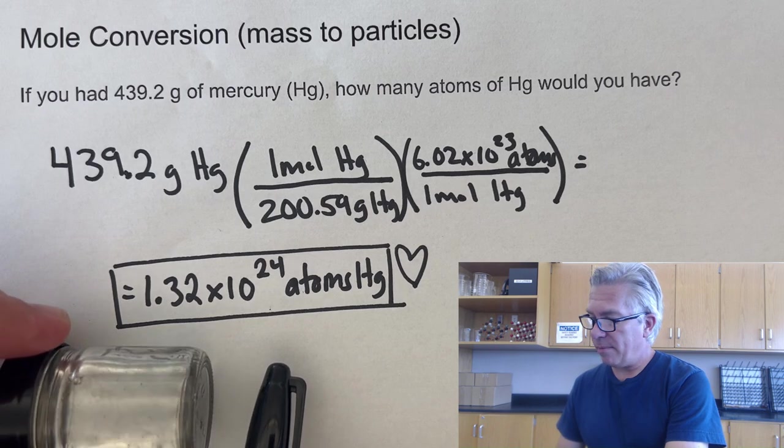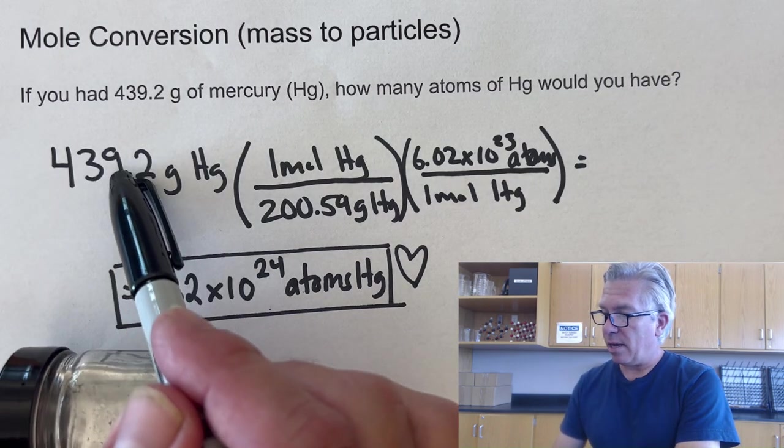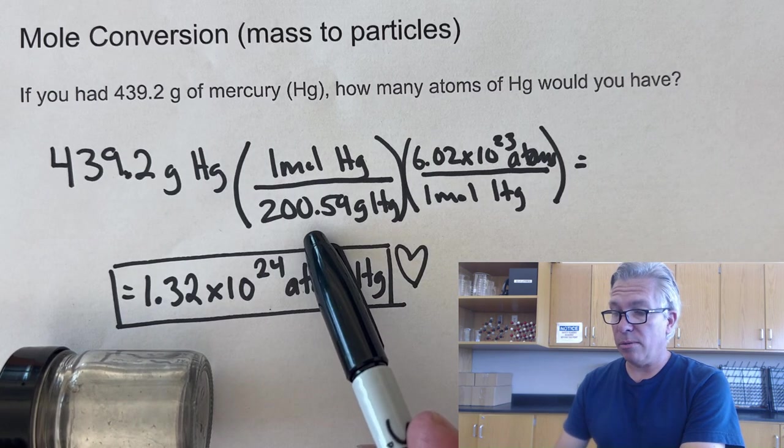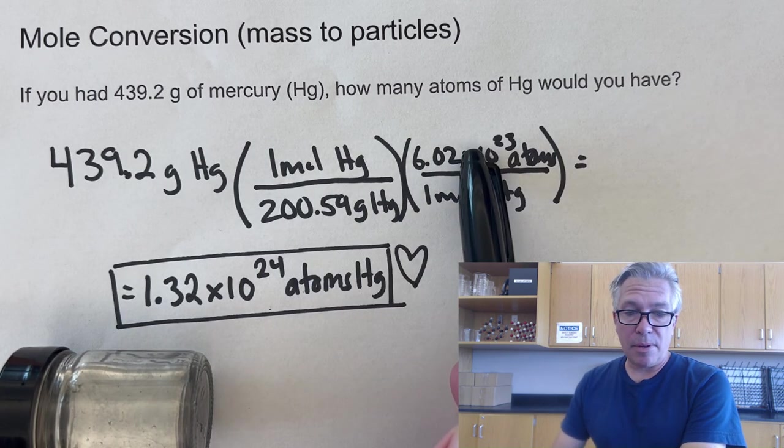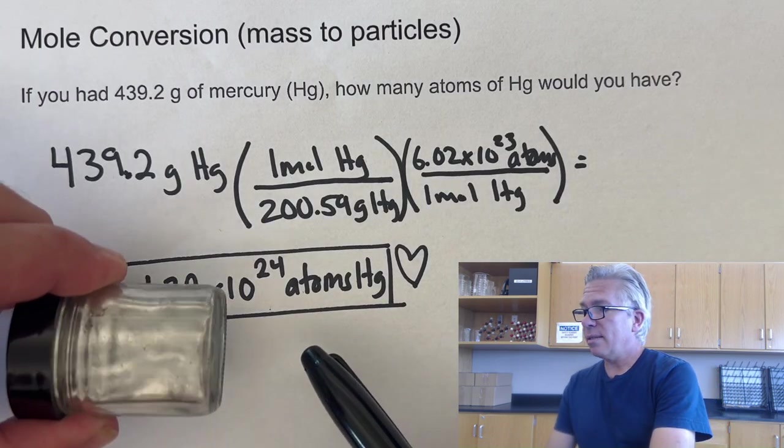And so we have been able to predict, again, by taking the mass, divide by its molar mass, which in this case is 200.59. Again, multiply by Avogadro's number, and we get 1.32 times 10 to the 24th atoms in this little jar. And yeah, that's pretty heavy, but really cool to look at.